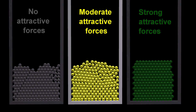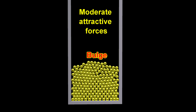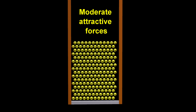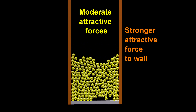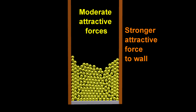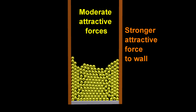Notice how, for the yellow spheres, there is a bulge at the top. Now suppose that the walls exert an attractive force on the spheres stronger than the force the spheres exert on each other. Now, there is an upward bulge in the corners.